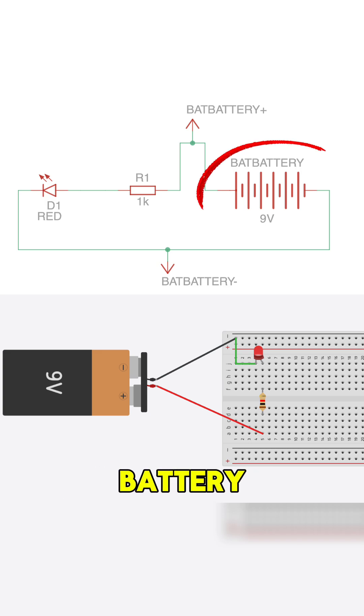On the schematic, you'll see the battery symbol, the resistor labeled R1 1 kilo ohm and the LED marked D1 red.